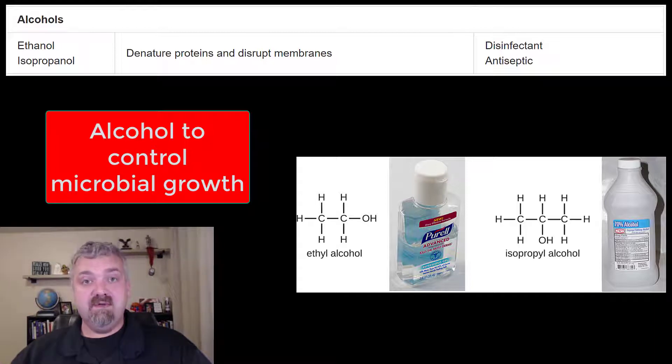As you can see here, there are two types of alcohol that we use: ethanol, which would be the same kind of alcohol that people would use to get intoxicated, and isopropanol, which would be your rubbing alcohol.